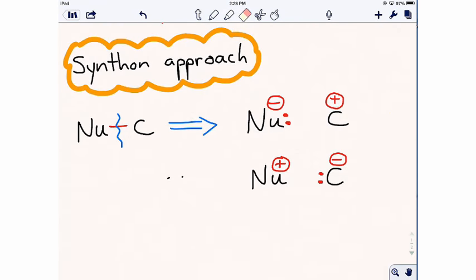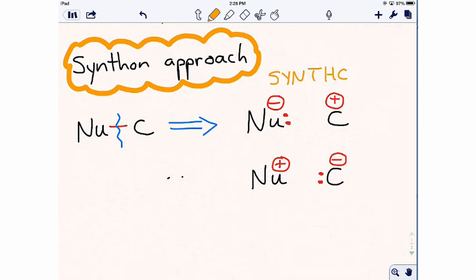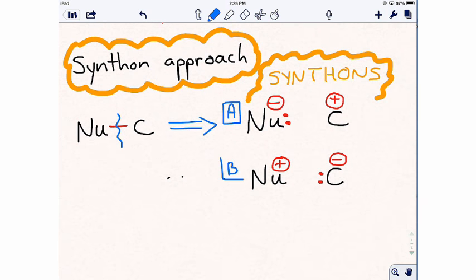The species with the positive and negative charges are called synthons. We can label the first pair A and the second pair B. These are not the actual reagents that are used, but just a representation of where the electrons might have come from.